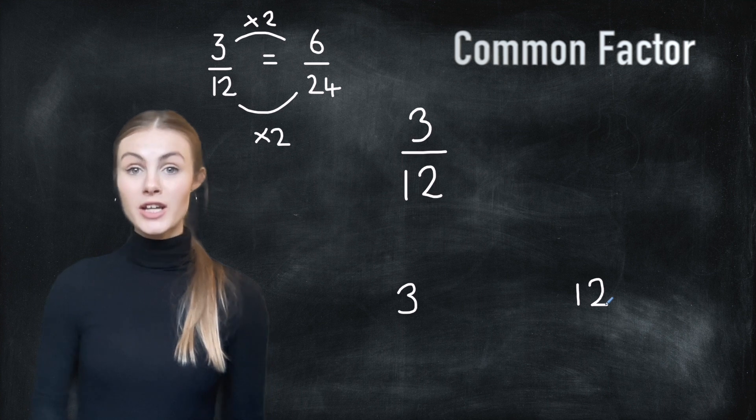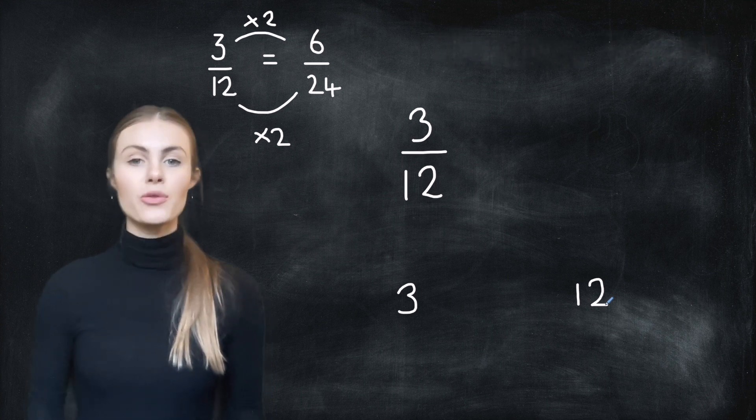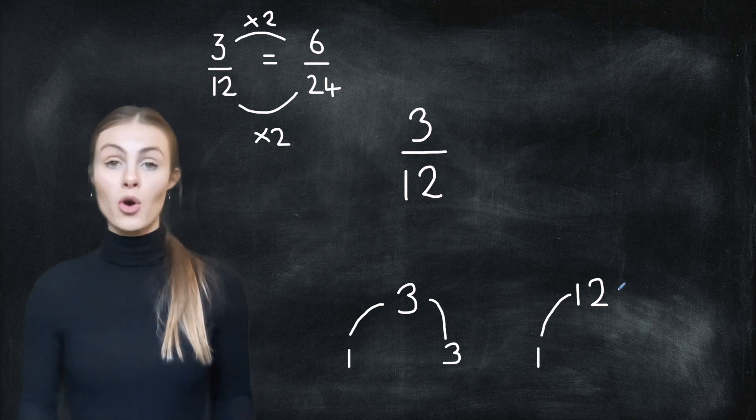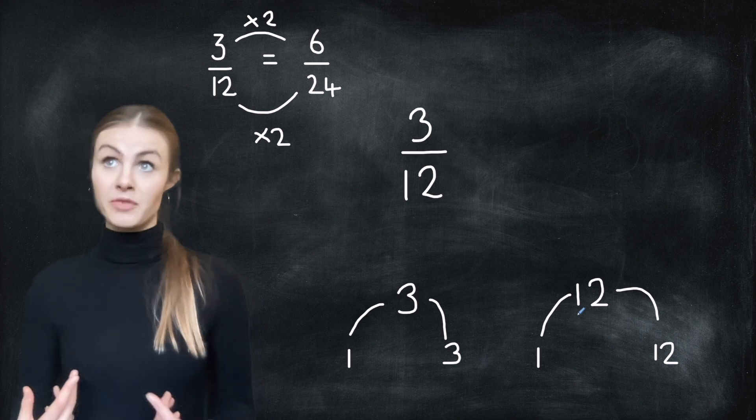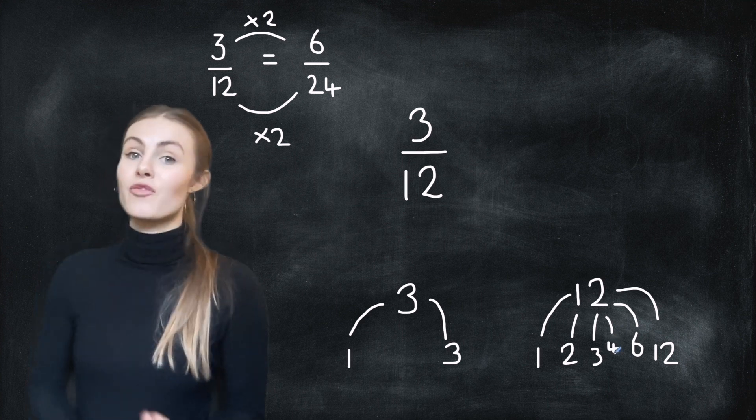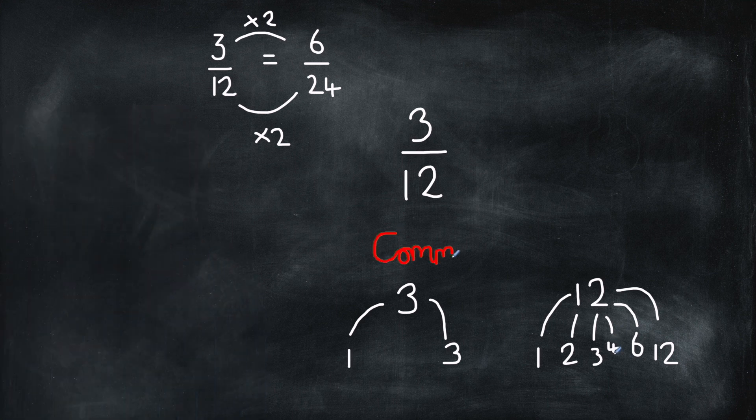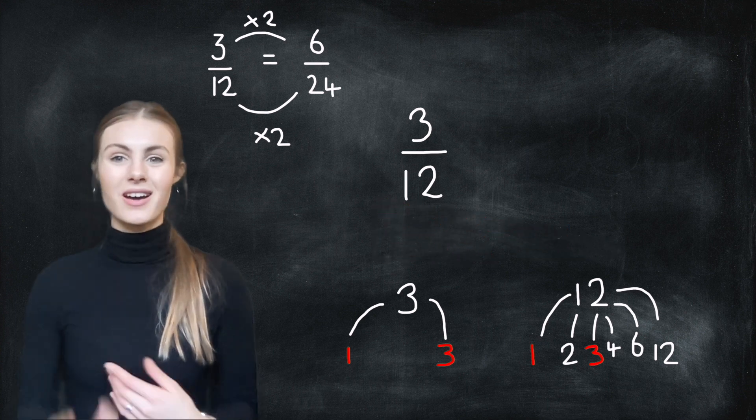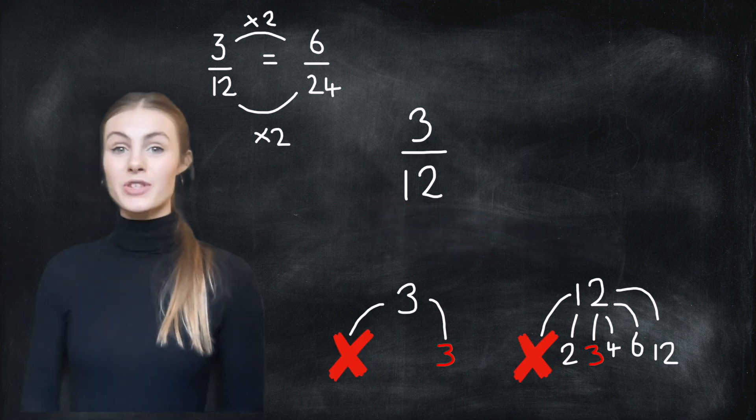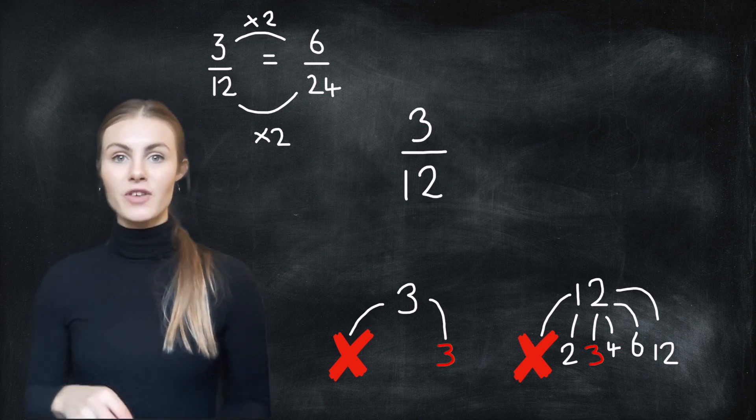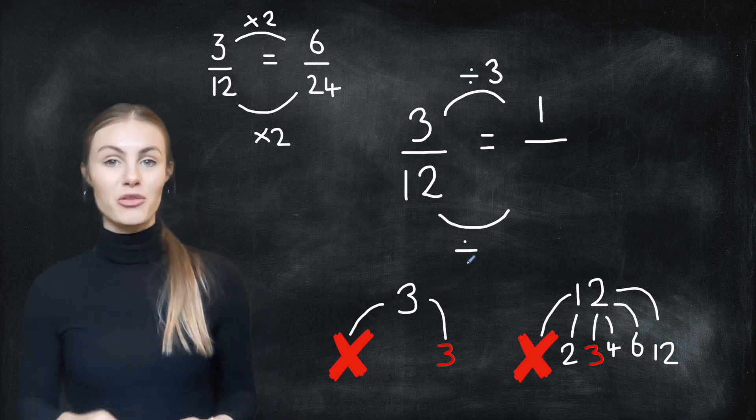Easiest way of doing this is by writing out all of the factors for both numbers. So three can only be divided by one and itself, so three and one. Twelve can be divided by one and itself because every number can be divided by one and itself and also two and six and three and four. Fab, now we have the factors we need to find the common ones. Now dividing by one is kind of useless so just forget about that. So that only leaves us with three. So we're going to divide both of these digits by three. So three divided by three is one and twelve divided by three is four.